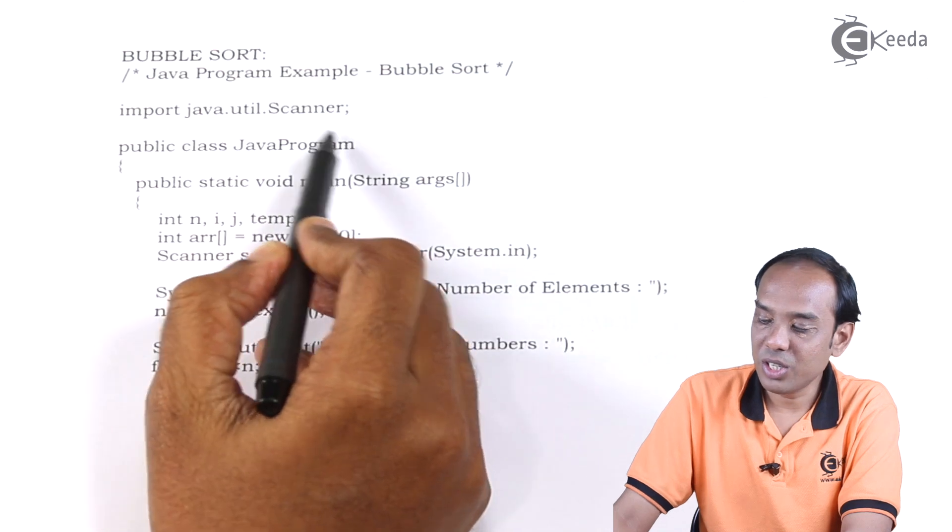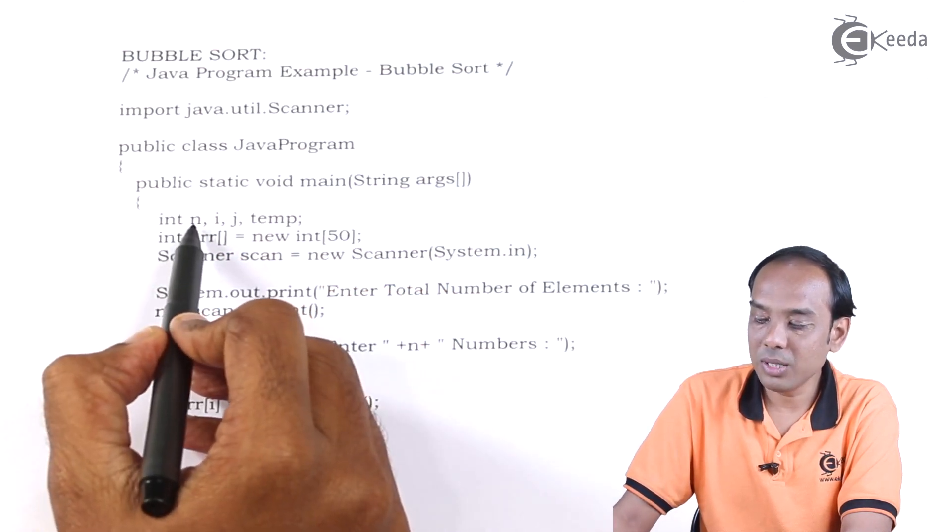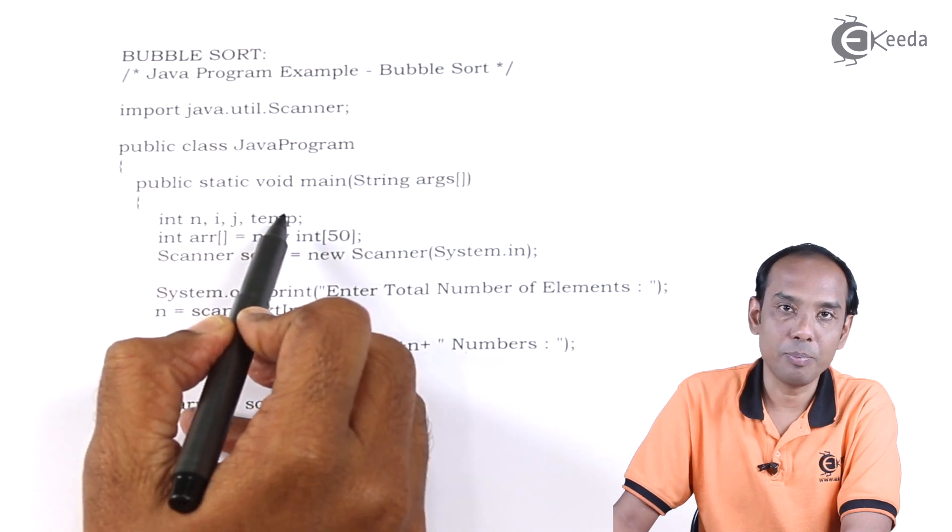We have defined a class called JavaProgram. Inside main method I have declared four variables: n, i, j, and temp.